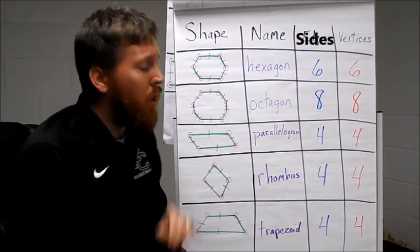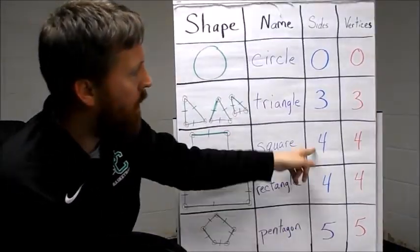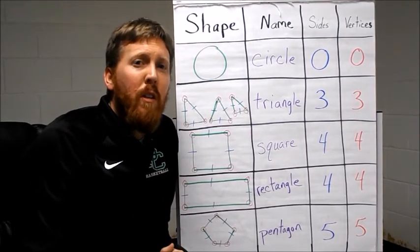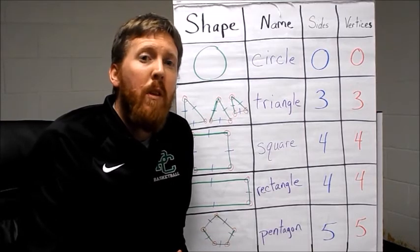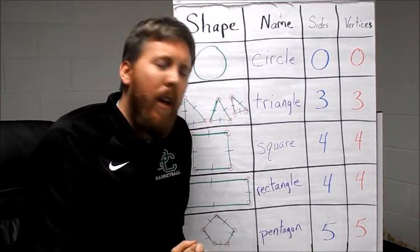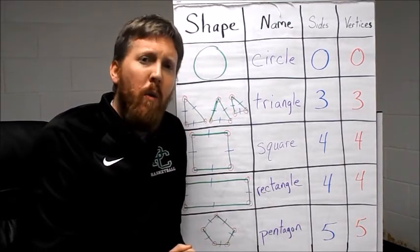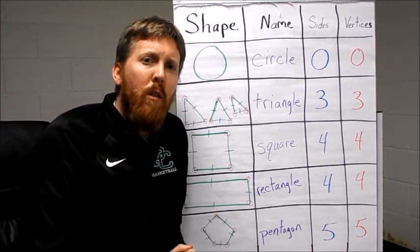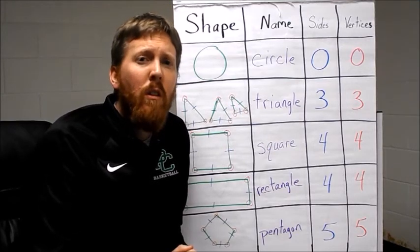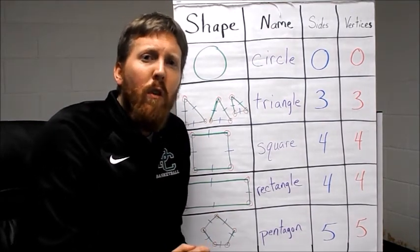A rhombus has four sides and four vertices, and a trapezoid has four sides and four vertices. You'll notice there are five different two-dimensional shapes that have four sides and four vertices. You might see on your paper the word 'quadrilateral' — think of a quadrilateral as any four-sided, four-vertex object. A square, rectangle, rhombus, trapezoid, and parallelogram are all quadrilaterals — four sides, four vertices.